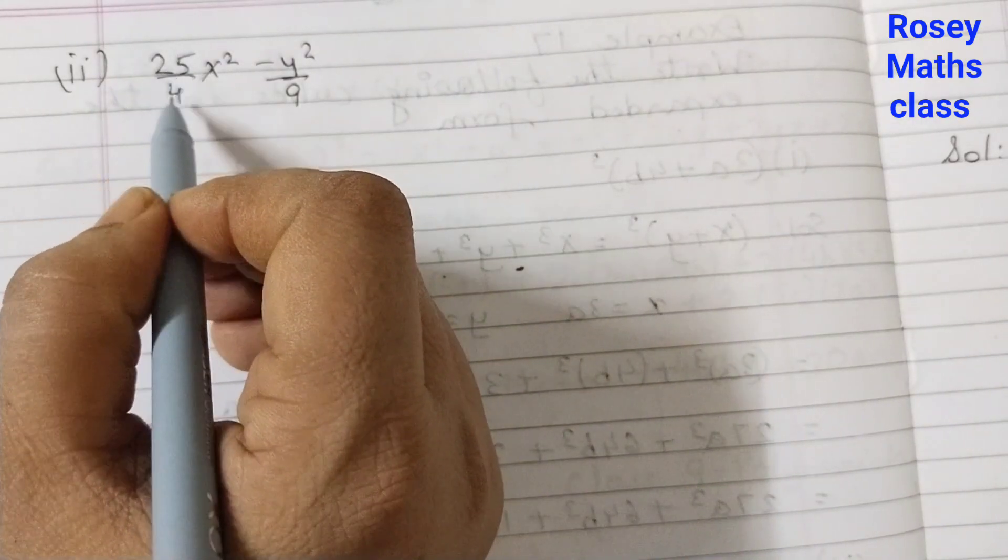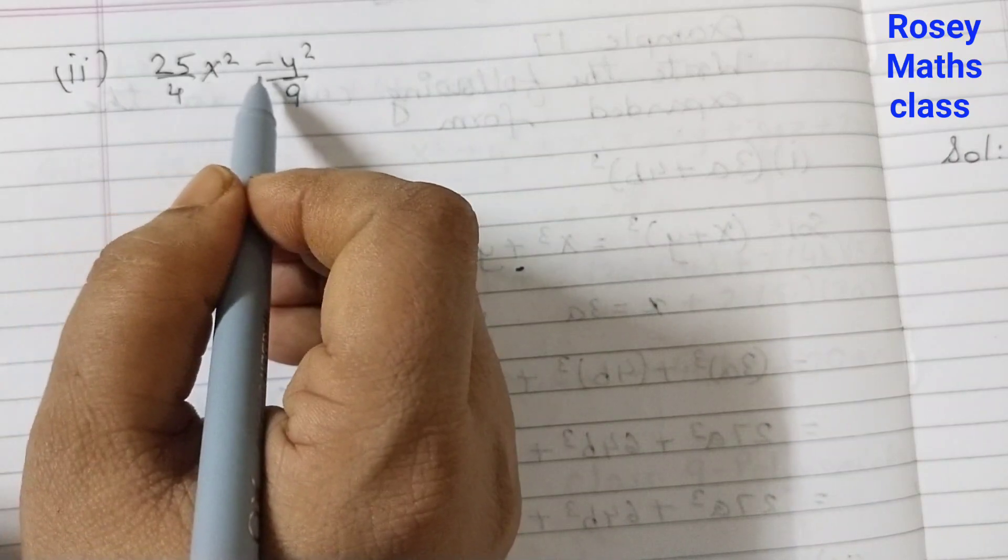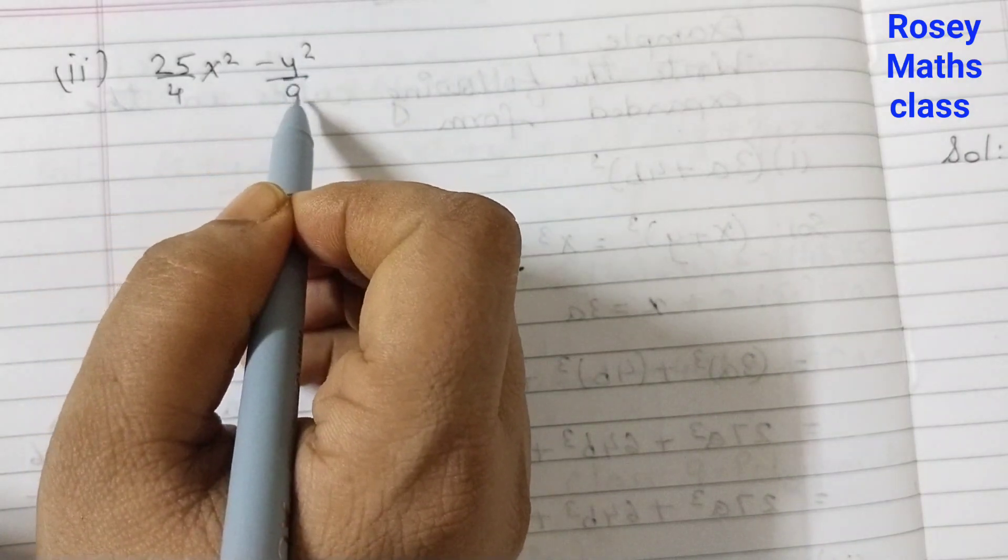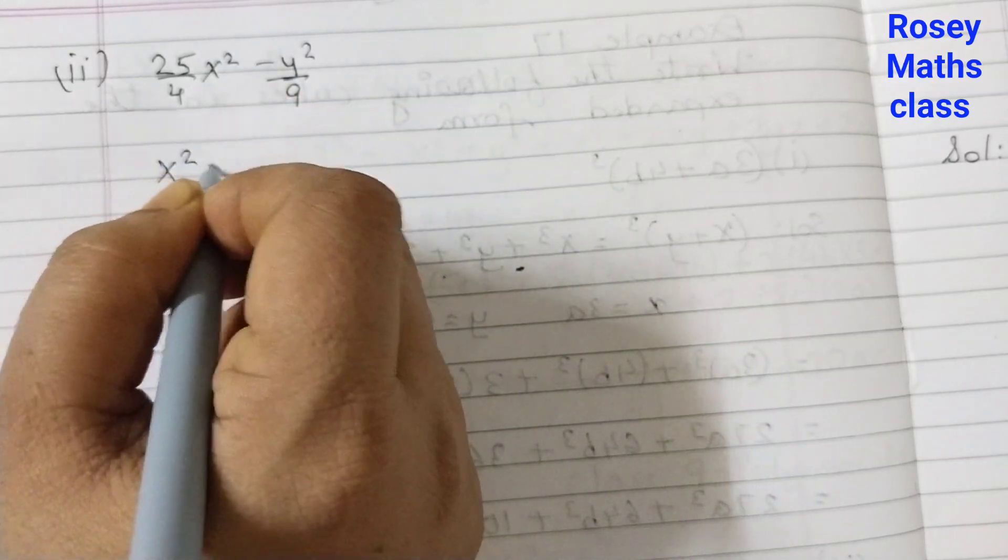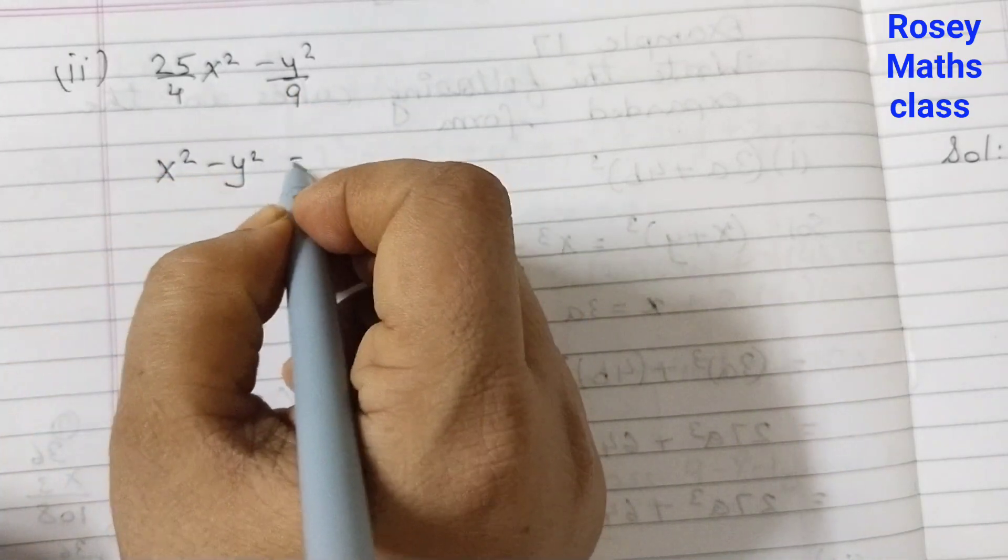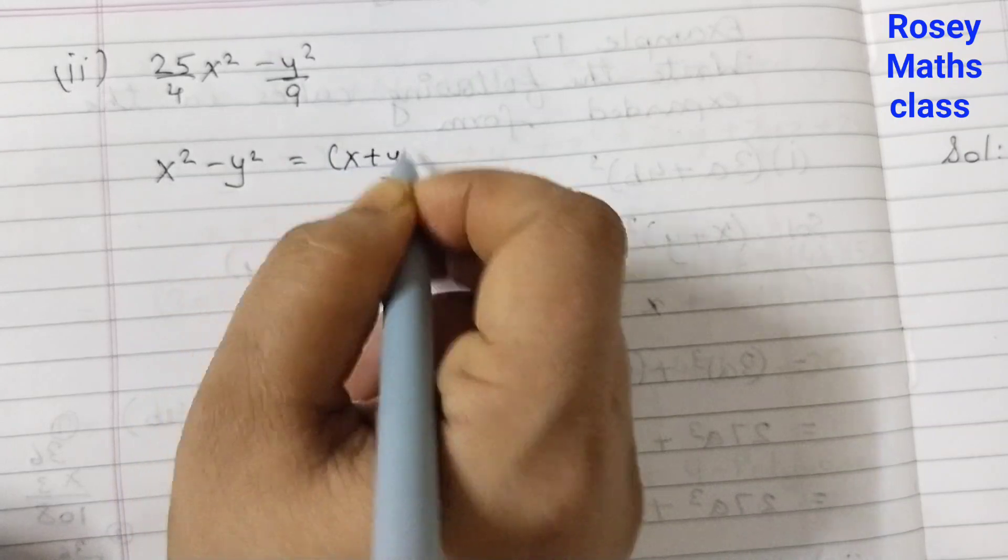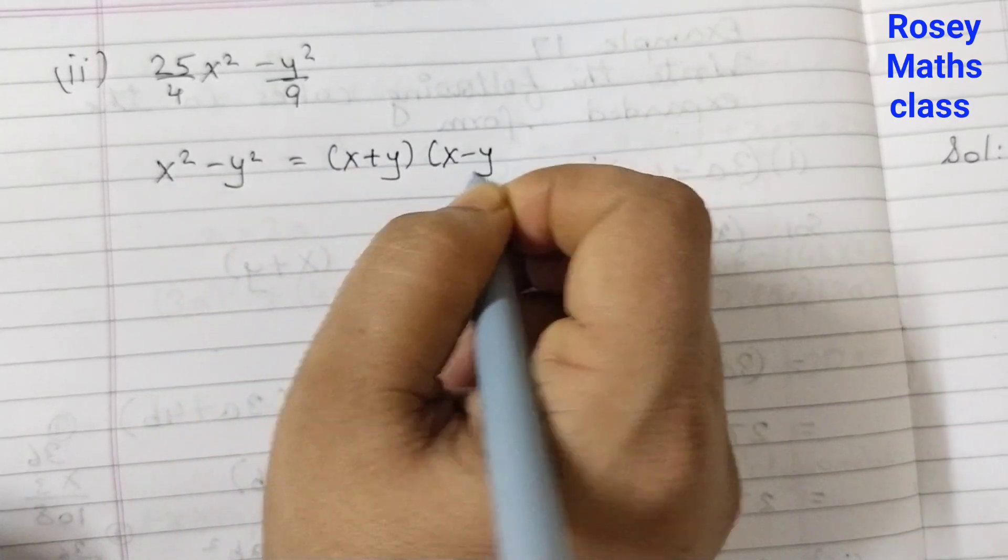Second one, 25 by 4 x squared minus y squared by 9. Now this matches with the identity x squared minus y squared is equal to x plus y into x minus y.